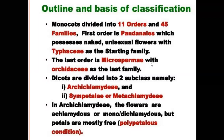Microspermae has Orchidaceae as the last family. The Dicotyledonae are divided into two subclasses. The characters of Dicotyledonae are mainly four: first, the seed or embryo contains two cotyledons; second, leaves show reticulate venation; third, flowers are pentamerous or tetramerous; fourth, taproot system.